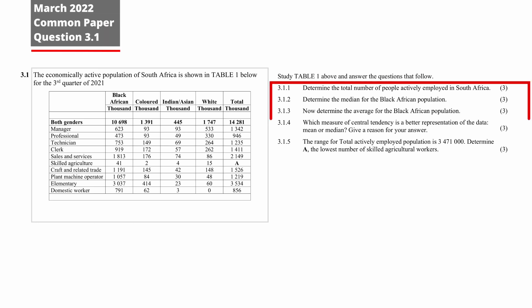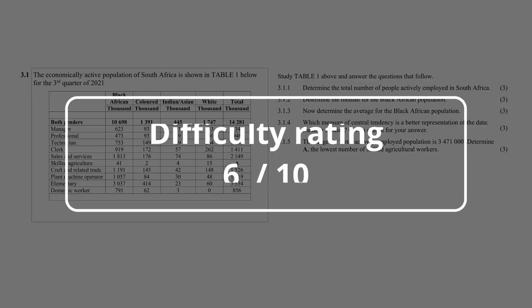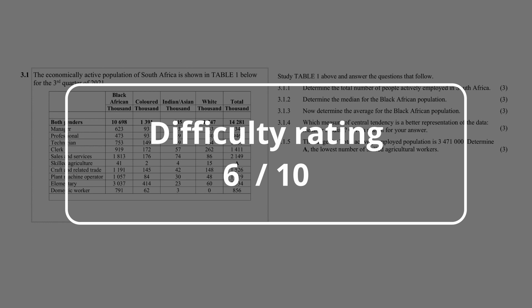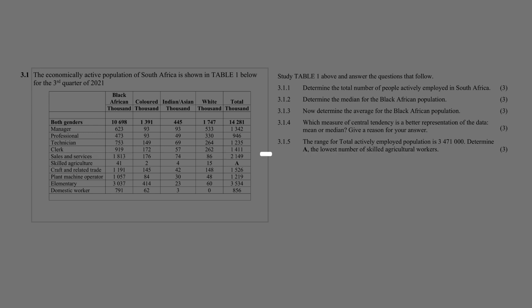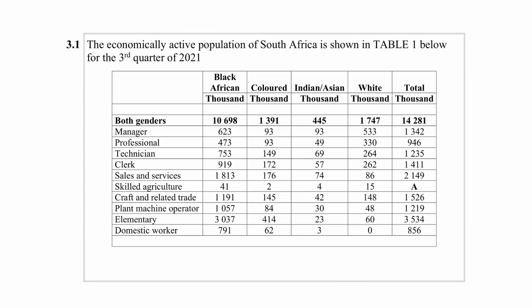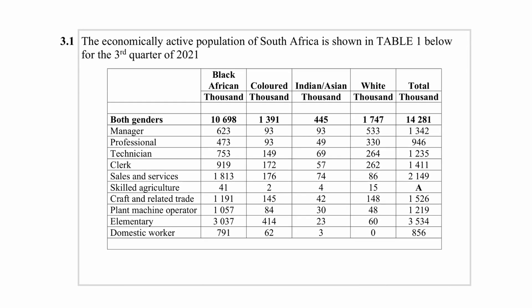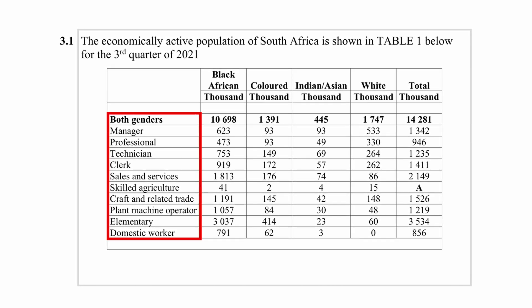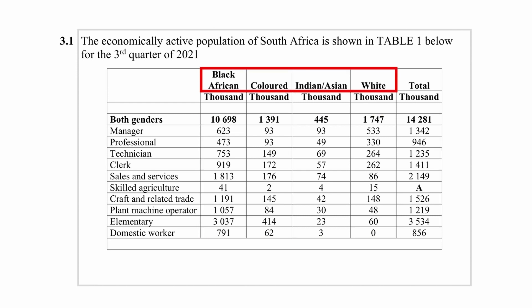Question 3.1 consists of five data handling questions designed to assess your ability to analyze data presented in the table. I give this question an overall difficulty rating of 6 out of 10. You are given a table that shows the economically active population of South Africa for the third quarter of 2021. The table lists the professions and the number of people that fill those positions per race. All values are given in thousands.